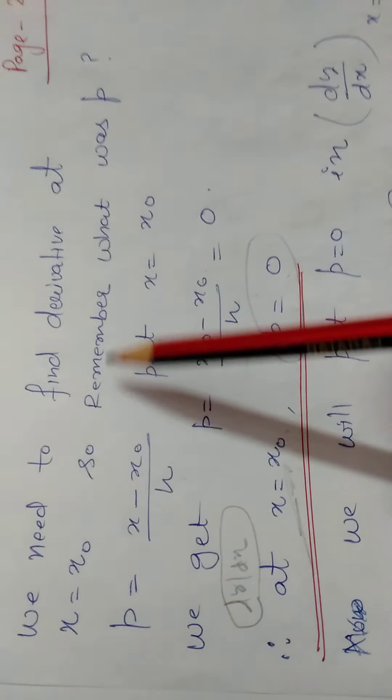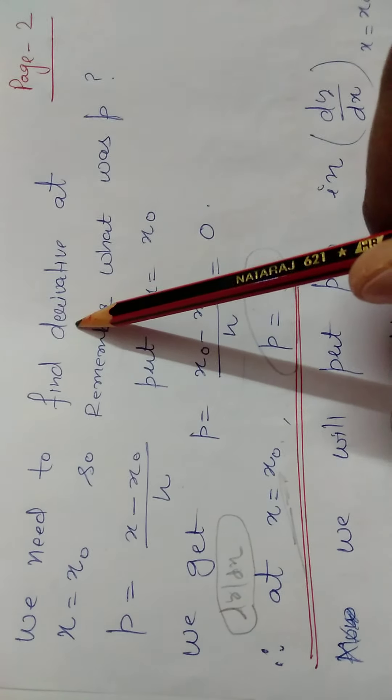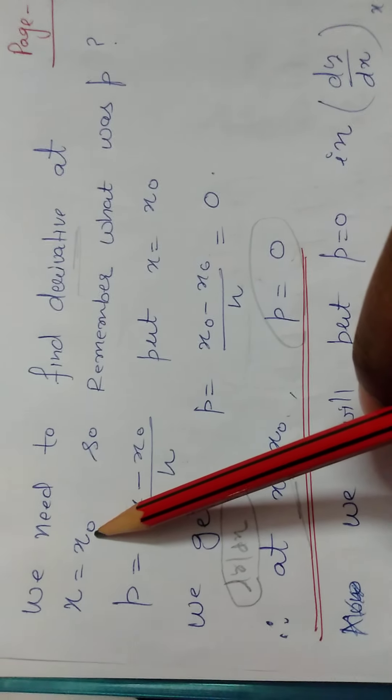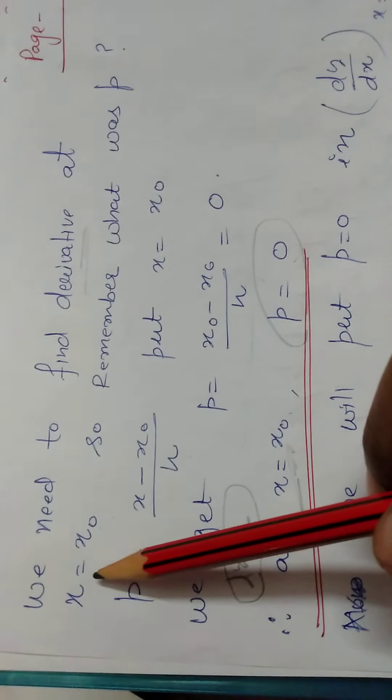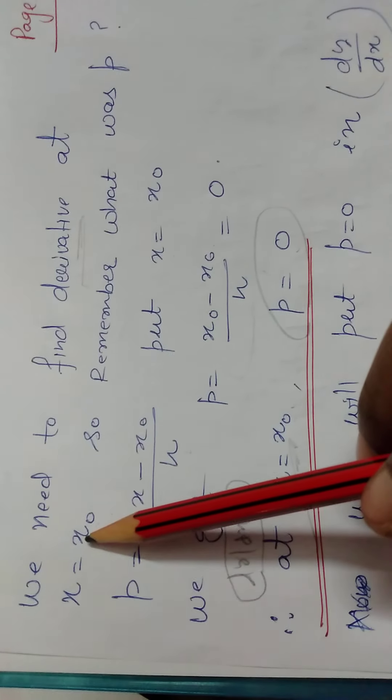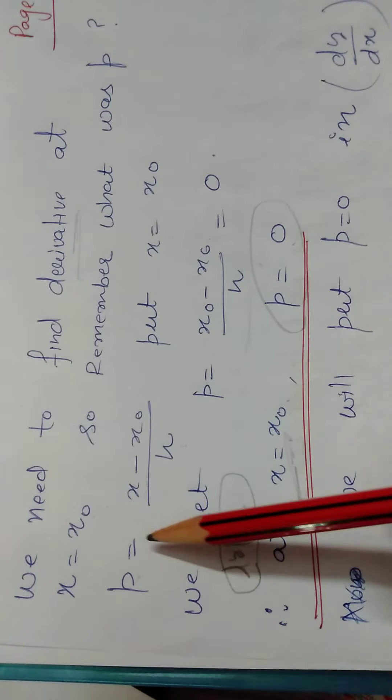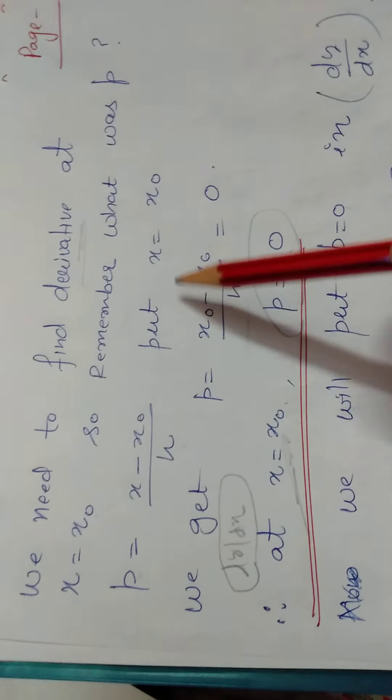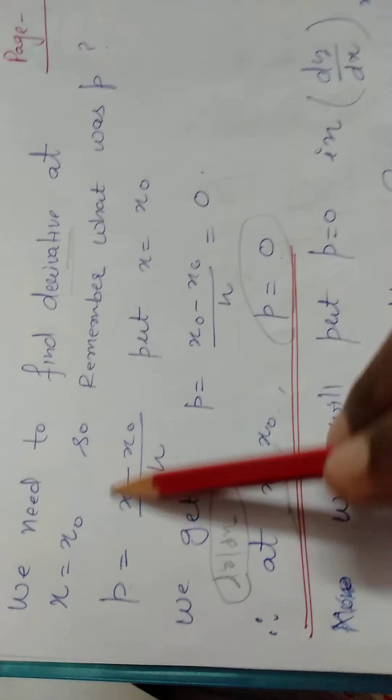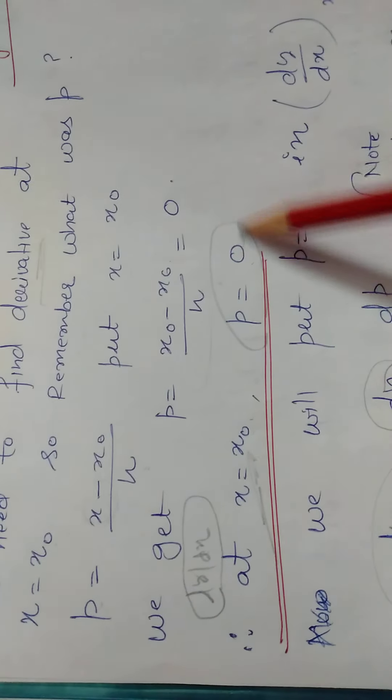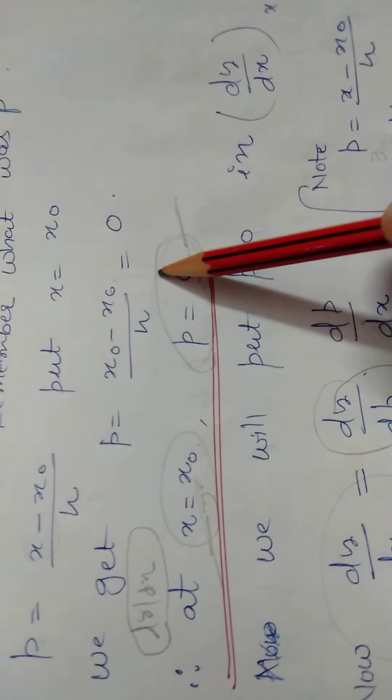Our question is we need derivative at some point x equals x naught. For finding derivative at x equals x naught, we take the value of P. P is x minus x naught divided by h. At x equals x naught, if you substitute, then P will become 0. So at point x equals x naught, value of P is 0.